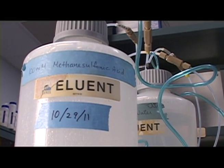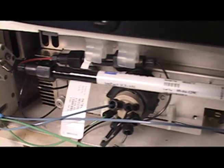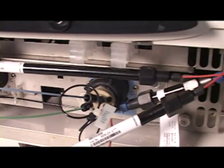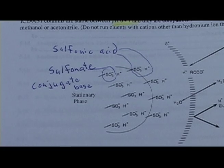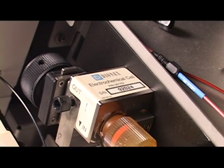In this case, we are using diluted methane sulfonic acid as the eluent, a column comprised of a cross-linked styrene divinyl-benzene resin that is functionalized with sulfonate groups, and an electrochemical detector with a platinum electrode.